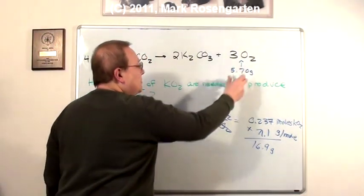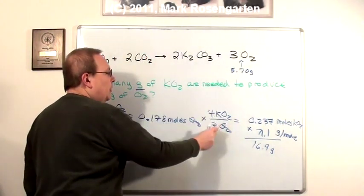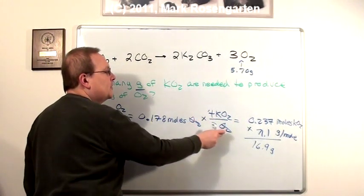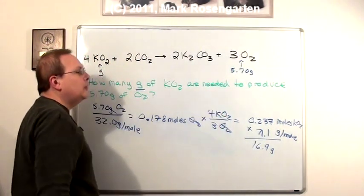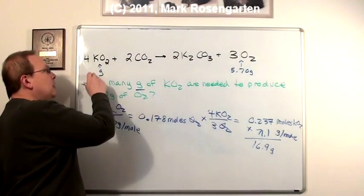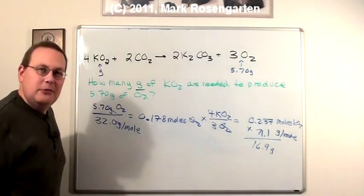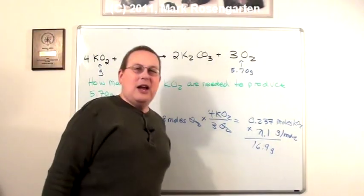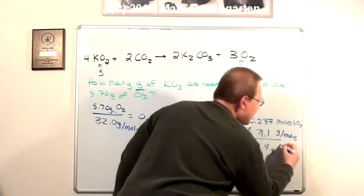Convert grams into moles, multiply by the ratio between them, so that what you're given cancels, and what you're looking for is left over. And then multiply it by the gram formula mass of what you're looking for, and that will tell you how many grams you're going to need of potassium superoxide.